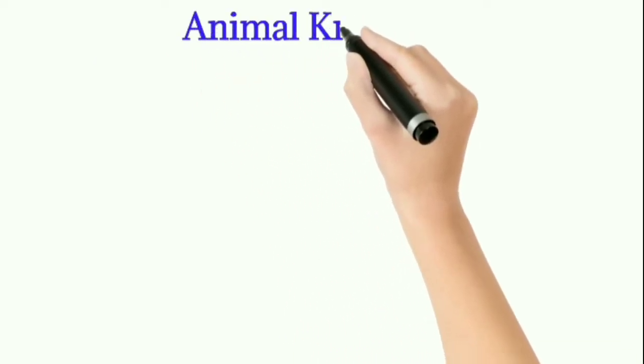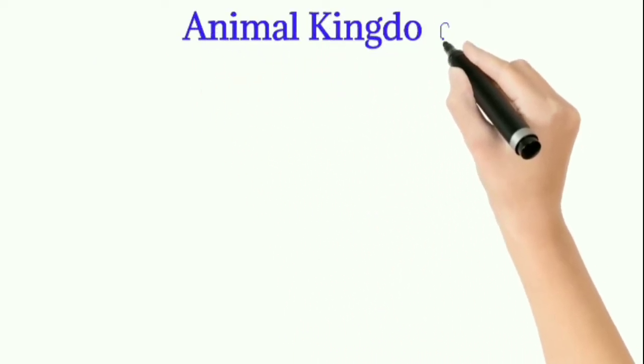Let us start today's session with the chapter Animal Kingdom. It is a diverse form — we know that diverse types of animals are living in this world. Making a kingdom among those animals is not an easy thing, that's why it is a diverse form. It is the fifth kingdom according to the classification of R.H. Whittaker. This kingdom includes many variations, diversities, phylums, etc.